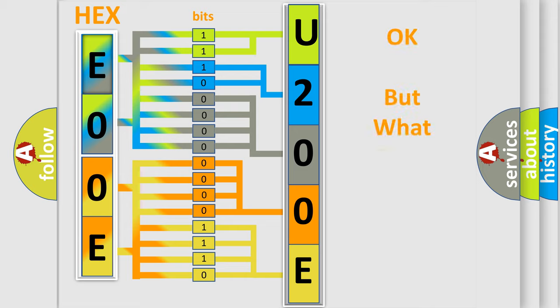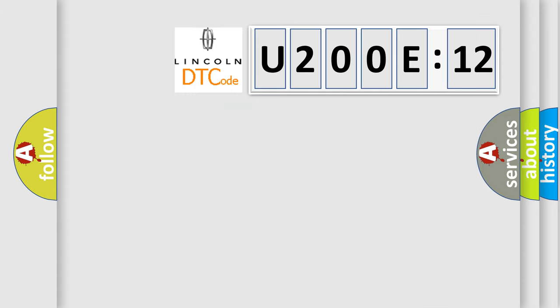The number itself does not make sense to us if we cannot assign information about what it actually expresses. So, what does the diagnostic trouble code U200E12 interpret specifically for Lincoln car manufacturers?